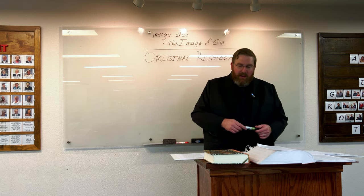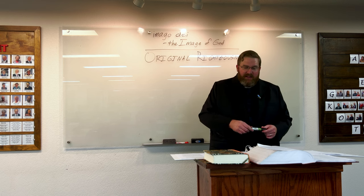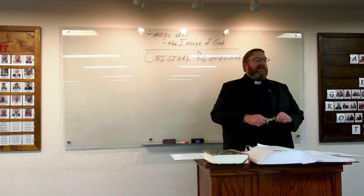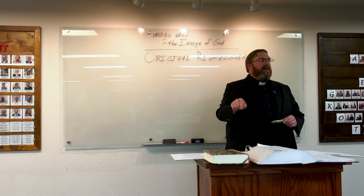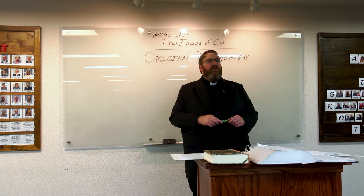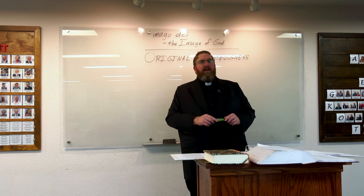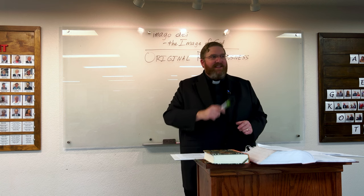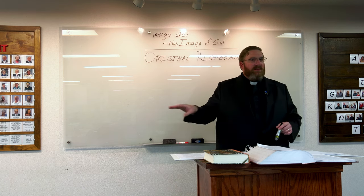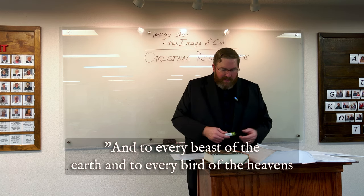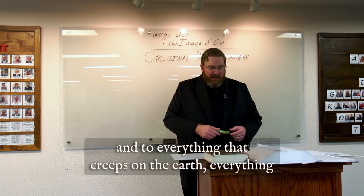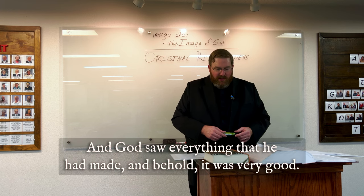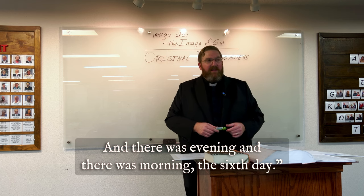Verse 29: 'And God said, Behold, I have given you every plant yielding seed that is on the face of all the earth and every tree with seed and its fruit — you shall have them for food.' And to every beast of the earth and to every bird of the heavens and to everything that creeps on the earth — everything that has the breath of life — I have given every green plant for food. And it was so. And God saw everything that he had made and behold, it was very good. And there was evening and there was morning the sixth day.